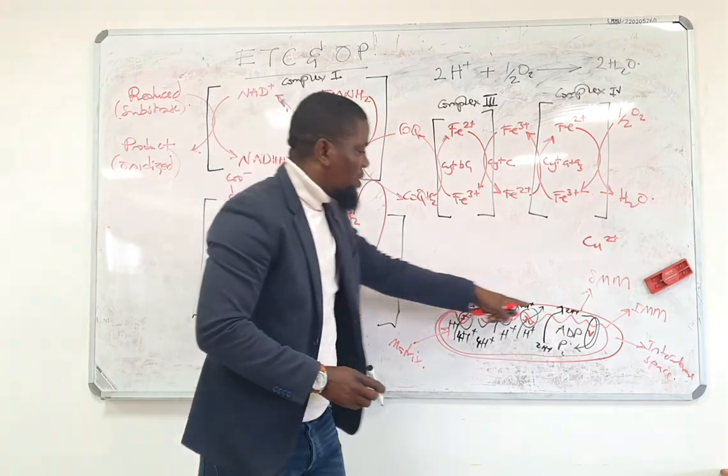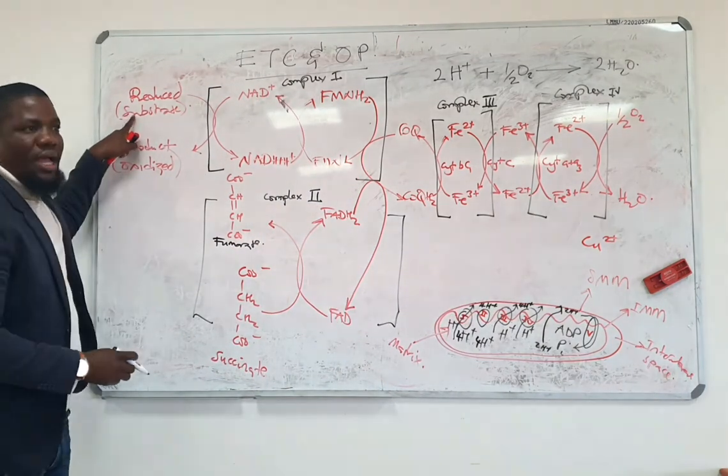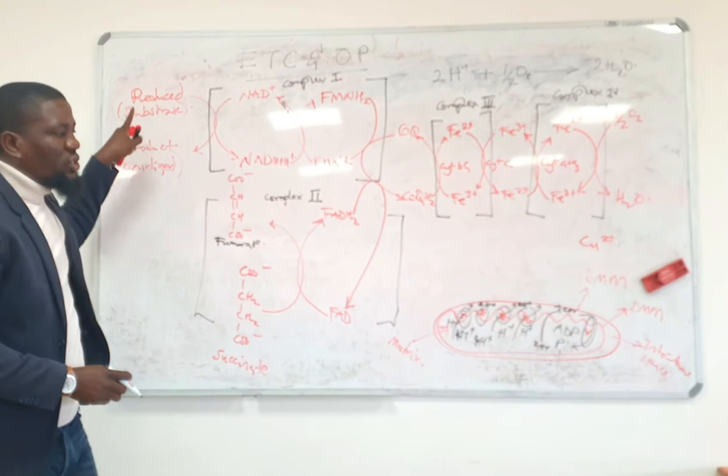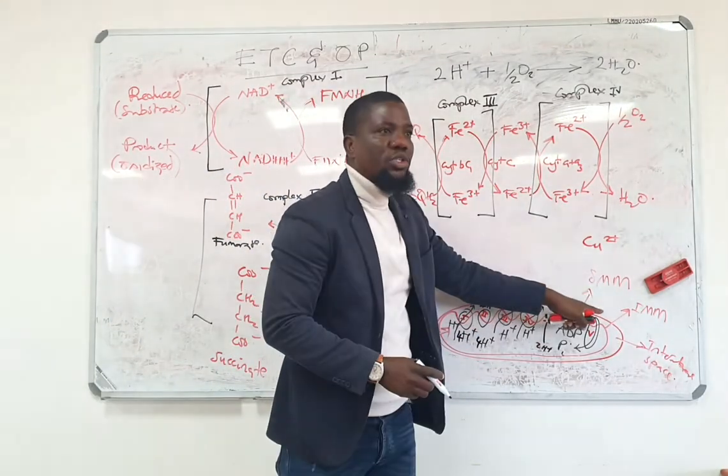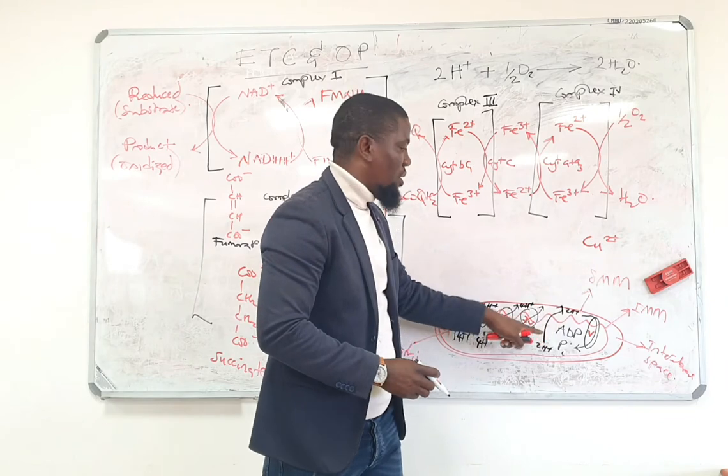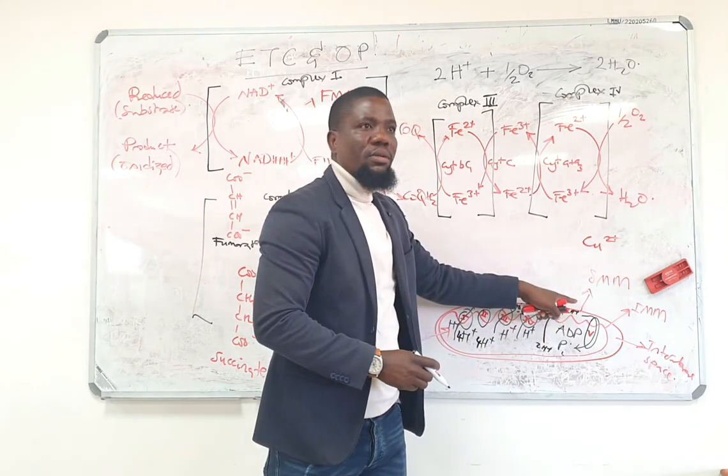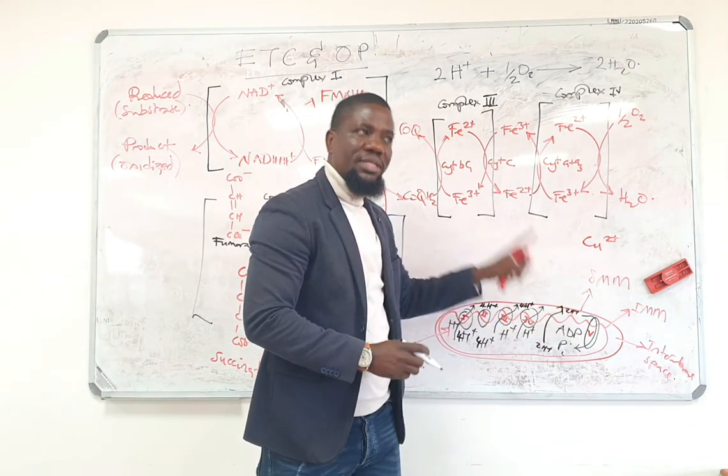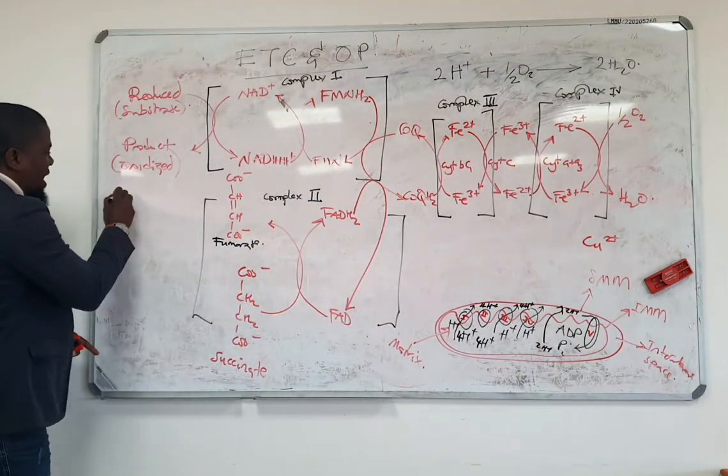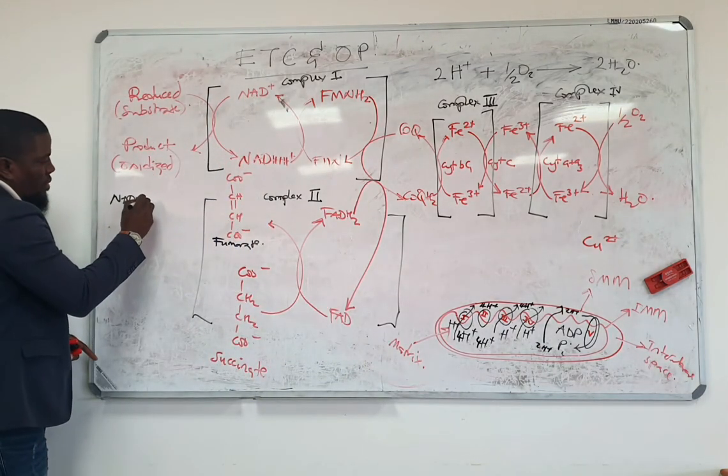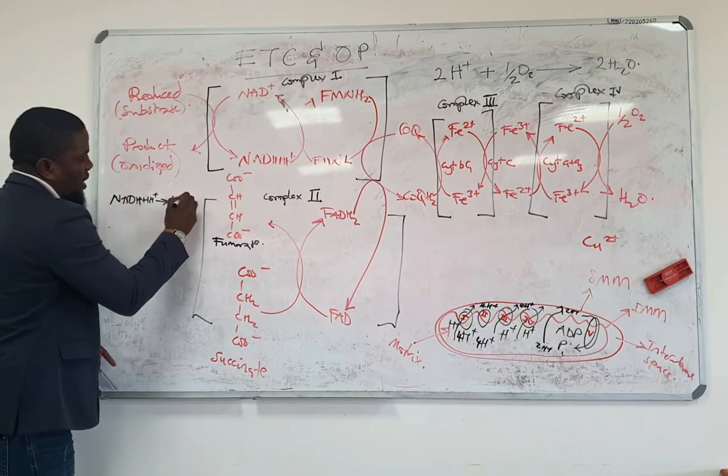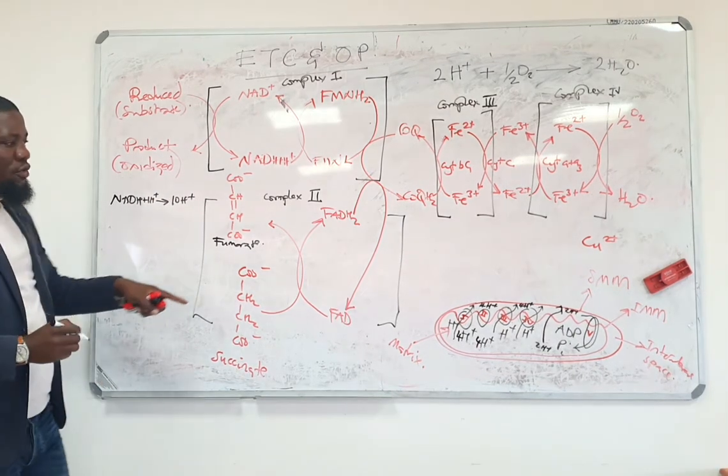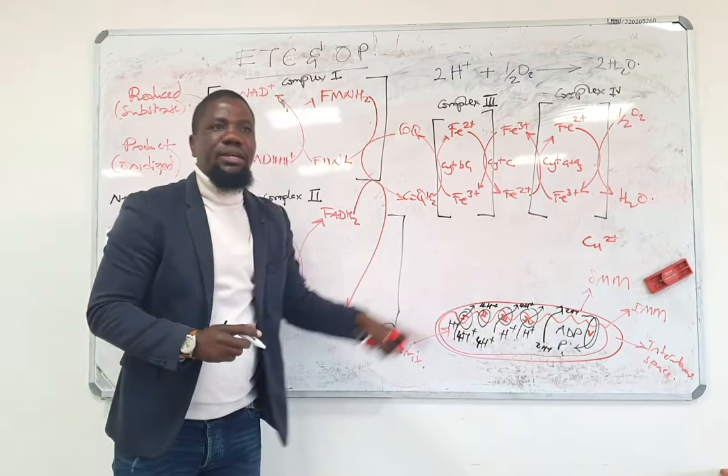So when you count as hydrogens are moving from NADH onto oxygen, how many protons will have moved from the matrix into the intermembrane space? What's the total? 10. So NADH plus H+ would move 10 hydrogens from the matrix into the intermembrane space.